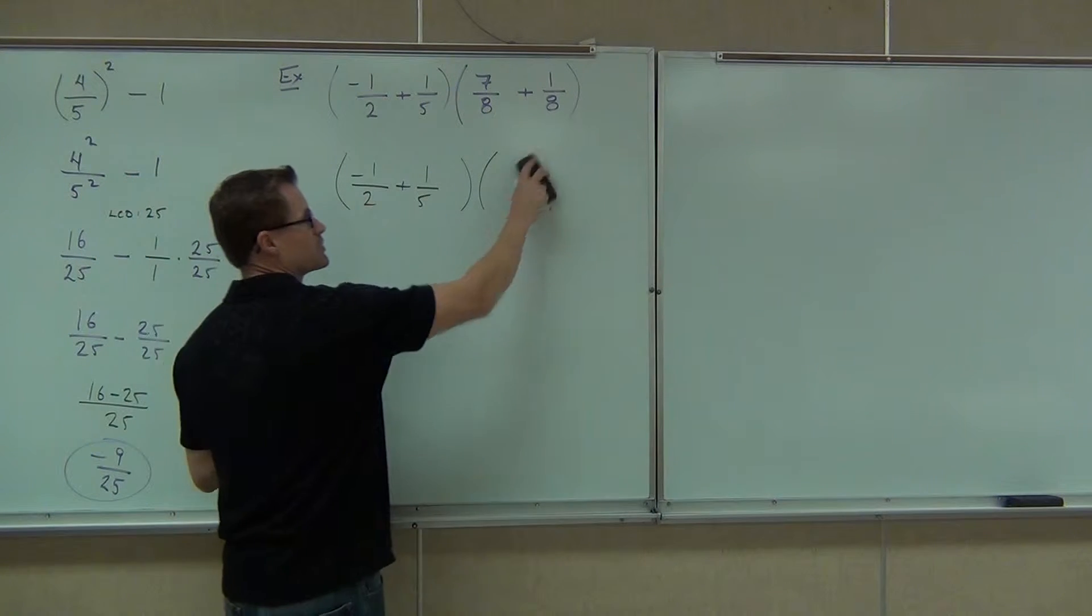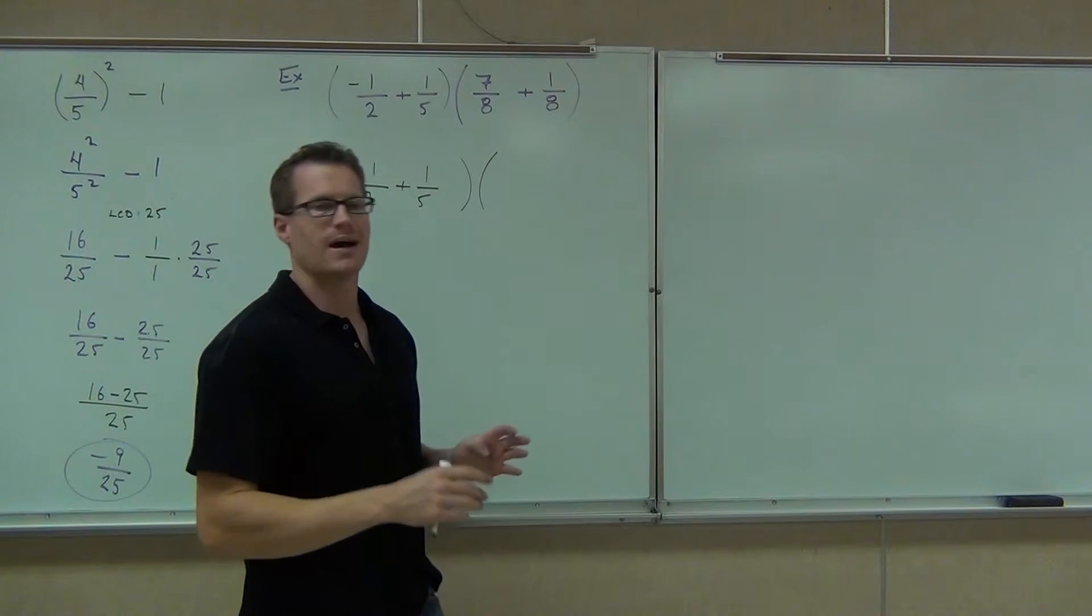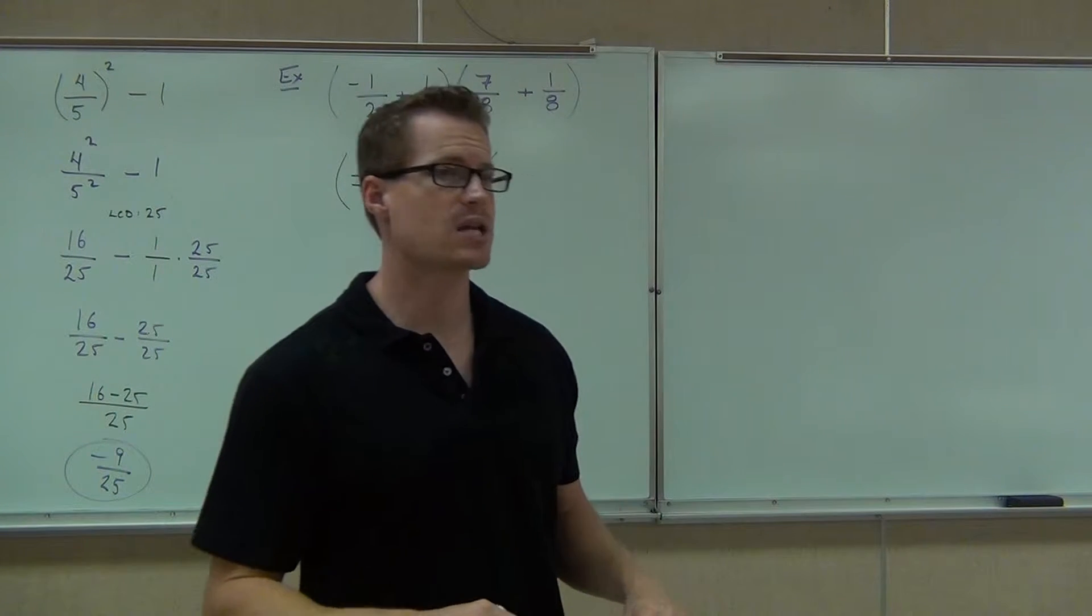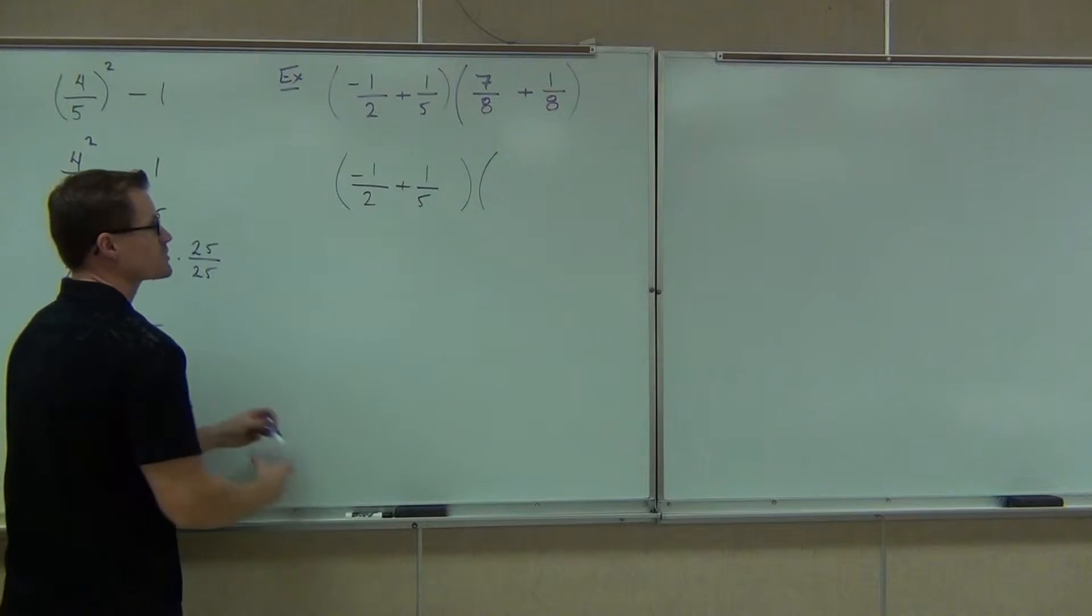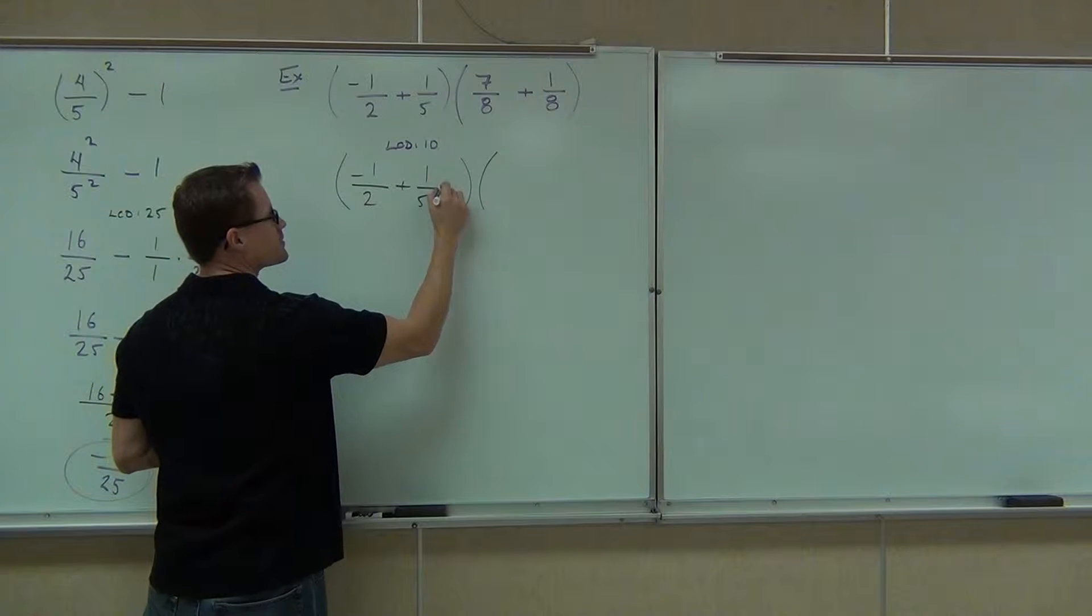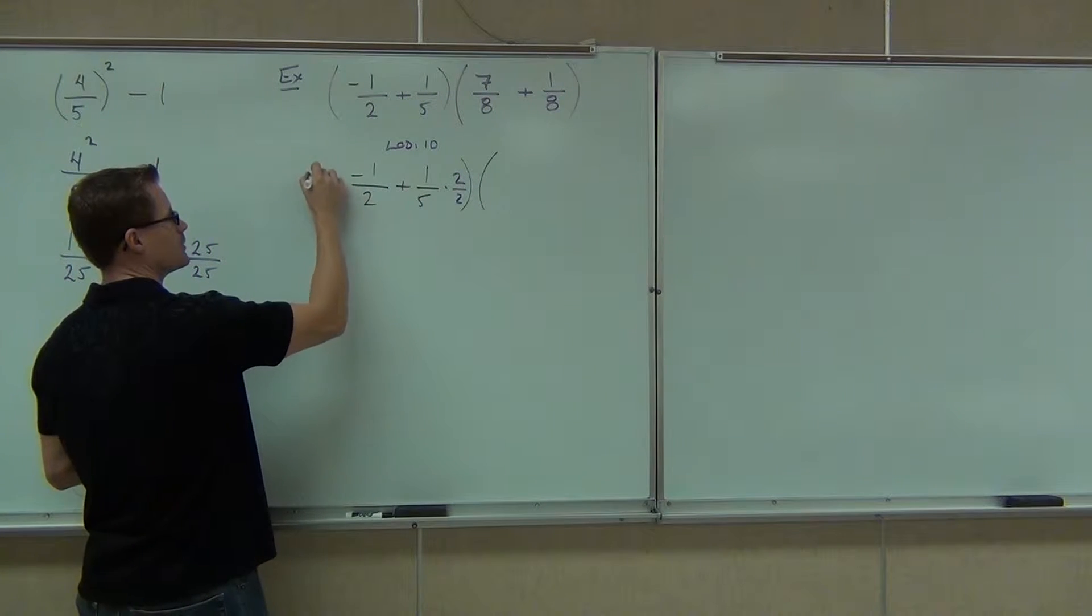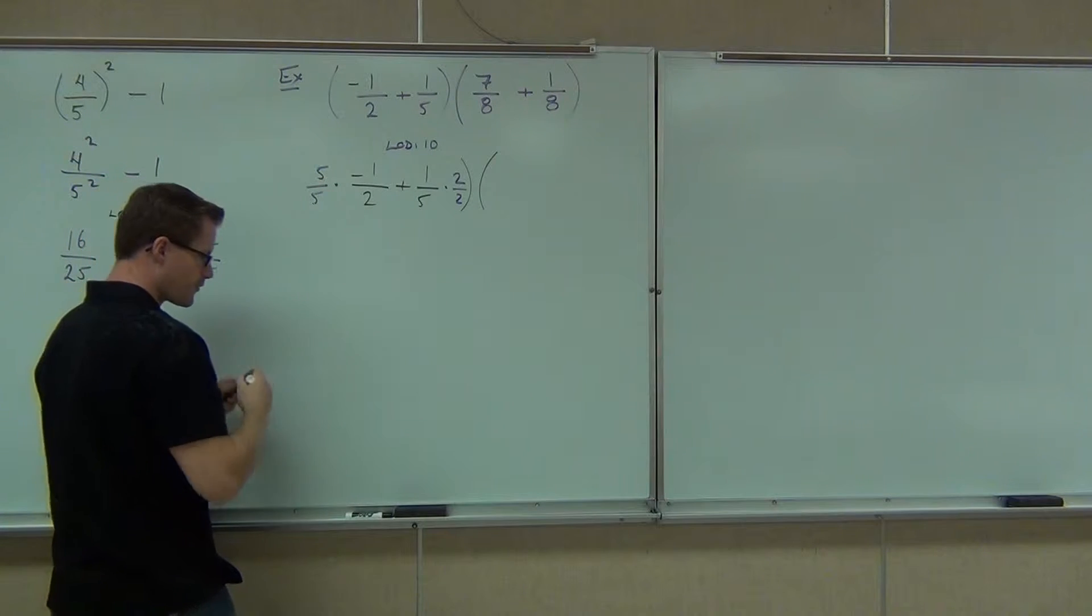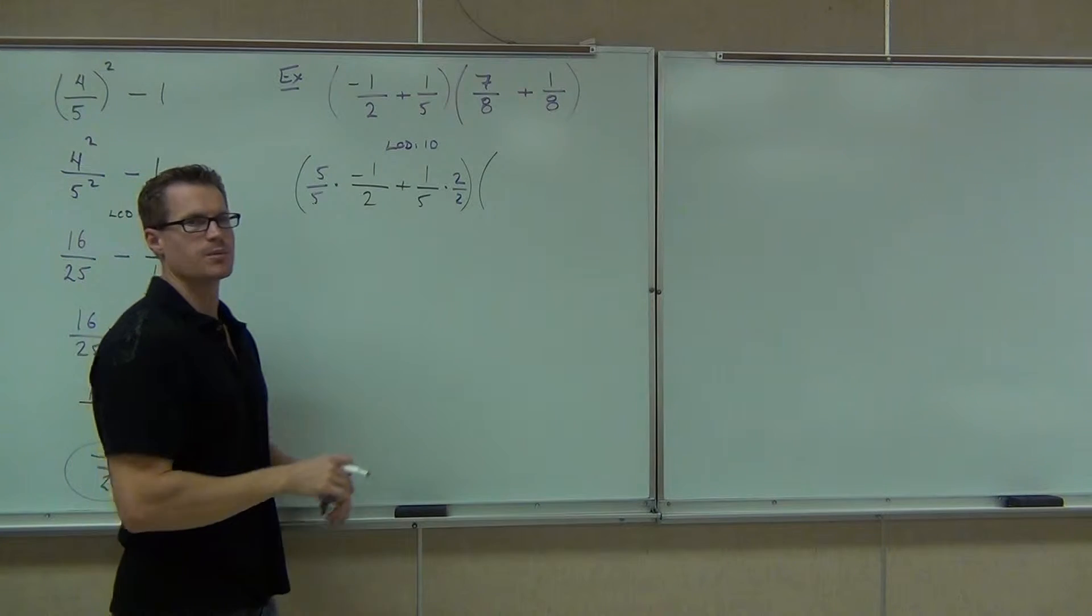I'll leave this one alone because we're going to actually do that right now. With this problem, we can't add them right now because we don't have that common denominator. Can you tell me what is the LCD here? 10. Good. So that means we're going to have to multiply. We're going to write that LCD, 10. This by 2 over 2, and that by 5 over 5, that's going to give us a new set of fractions that has a common denominator.